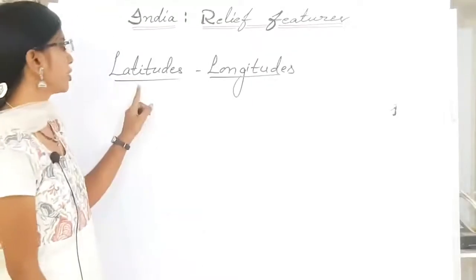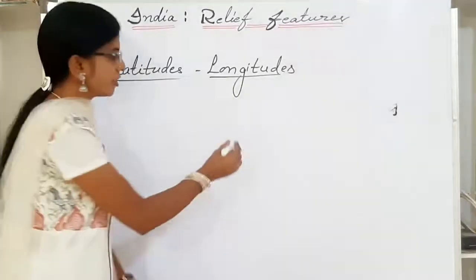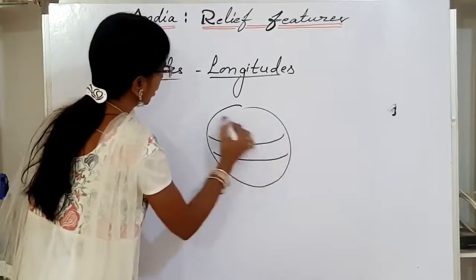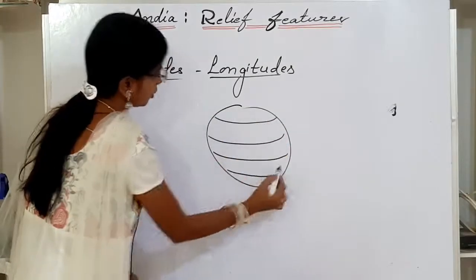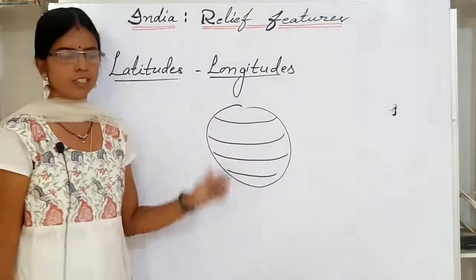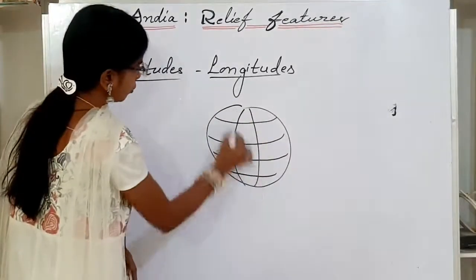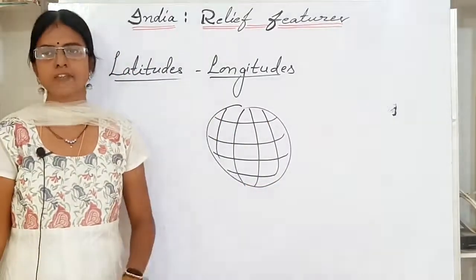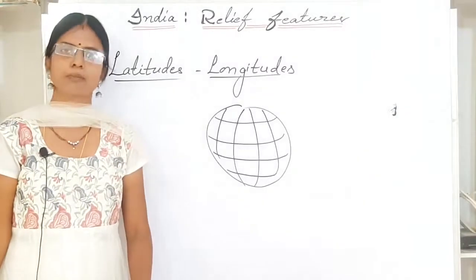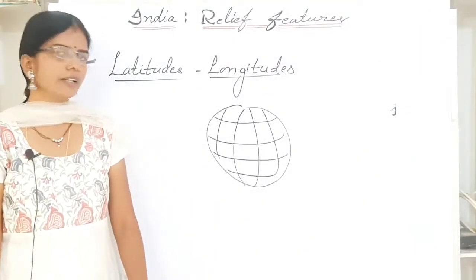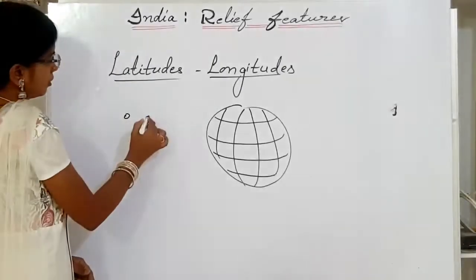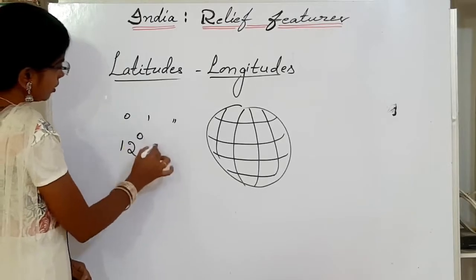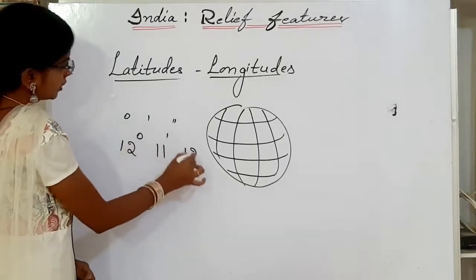Let us discuss about latitudes and longitudes. The imaginary lines which are drawn horizontally around the globe are called latitudes. Latitudes and longitudes help us in finding the exact location of a place on the earth. These are expressed in degrees, minutes, and seconds — for example, 12 degrees, 11 minutes, and 12 seconds.